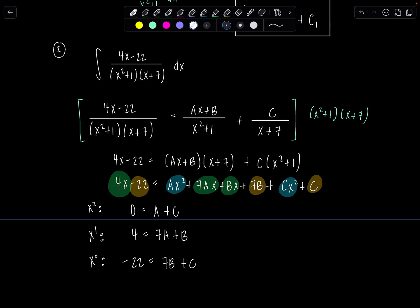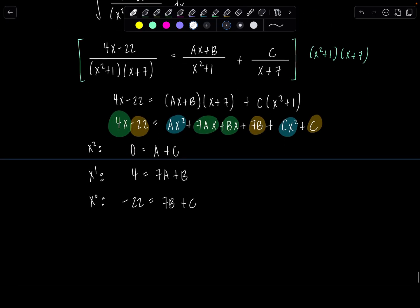So from here, what can we see? Well, a is equal to negative c. Let me sub that into this second equation. So then we have 4 equals negative 7c plus b. And then I still have this equation, negative 22 equals 7b plus c. So now I have a system of equations with just c and b.